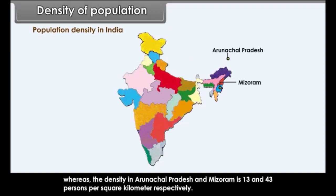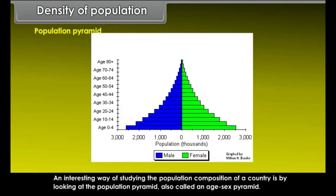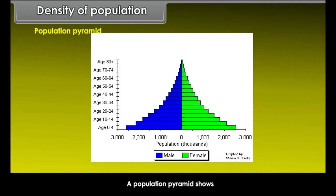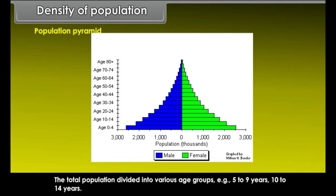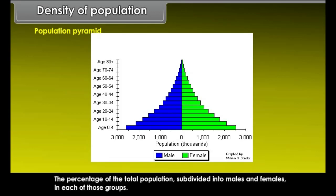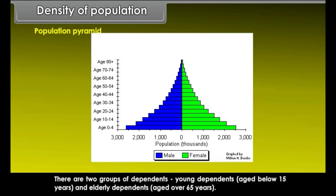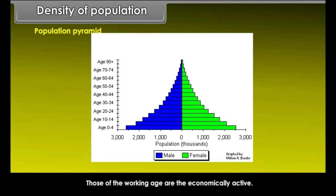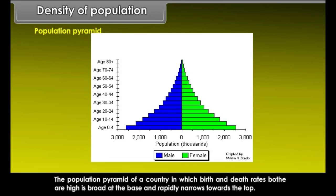Population Pyramid: An interesting way of studying population composition is by looking at the population pyramid, also called an age-sex pyramid. It shows the total population divided into various age groups (e.g., 5 to 9 years, 10 to 14 years), with the percentage subdivided into males and females. It also tells us how many dependents there are: young dependents (below 15 years), elderly dependents (aged over 65 years), and the economically active working-age population.